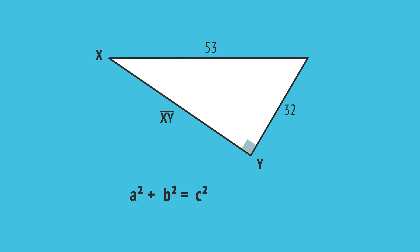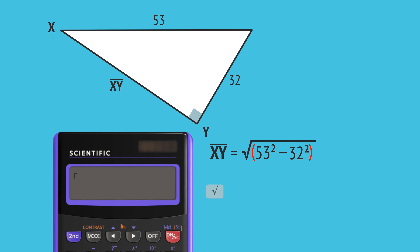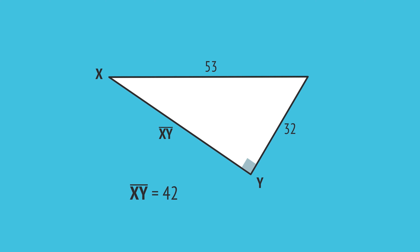To work out a shorter side, like this example where we need to calculate the side x, simply substitute the values into the formula. Then get the unknown by itself by rearranging — in this case subtracting 32 squared from both sides — and then taking the square root. Again, be sure to include brackets underneath the square root sign. Then enter as: square root, open brackets, 53 x squared, minus 32 x squared, close brackets, equals, which gives the length x equal to 42 when rounded to the nearest whole number.